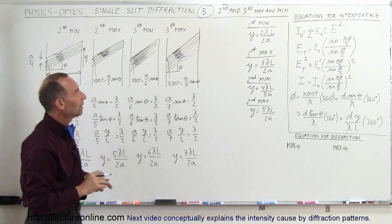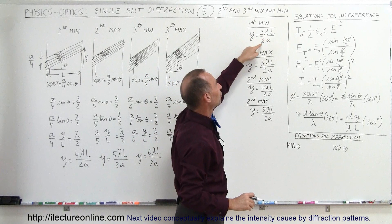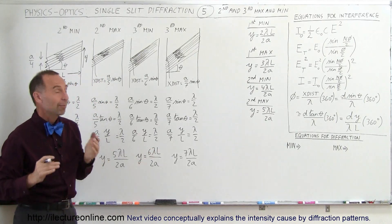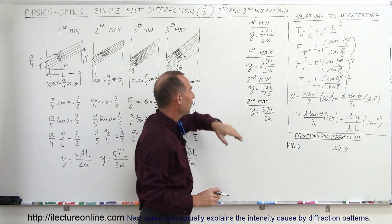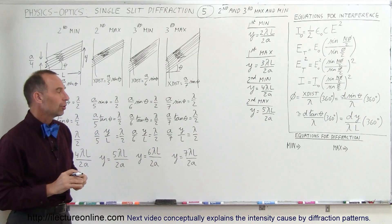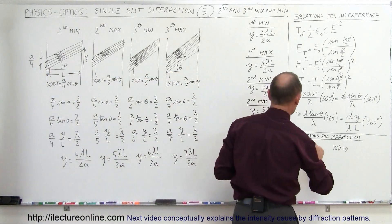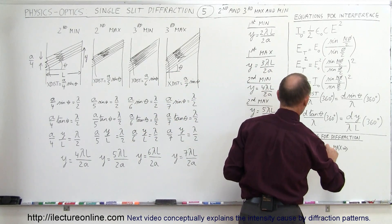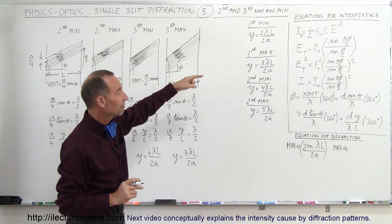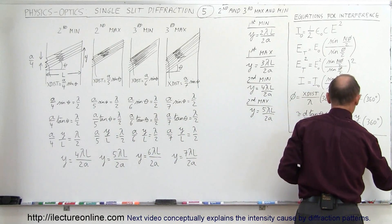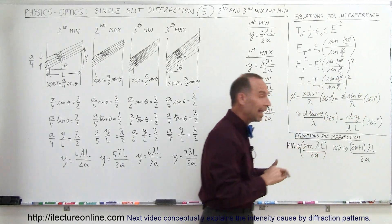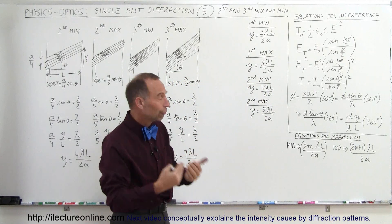You can see the pattern: the first minimum is at 2 lambda L over 2A, the second minimum at 4 lambda L over 2A, the third minimum at 6 lambda L over 2A. For the maxima: 3 lambda L over 2A, 5 lambda L over 2A, and 7 lambda L over 2A. We can write a general equation: all minima are found by Y equals 2M times lambda L over 2A, and all maxima are found by Y equals (2M + 1) times lambda L over 2A, where M is simply 1, 2, 3, 4 for the first, second, third, fourth maximum or minimum.